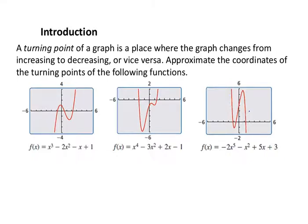What we've said is that a polynomial of degree n has, at most, n minus 1 turns. So a third-degree polynomial, at most, it's going to bend twice. Each time I say bend, I'm referring to a turning point — you can think of that as a bend in the graph.